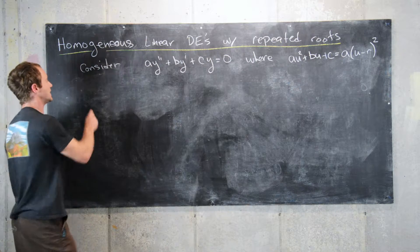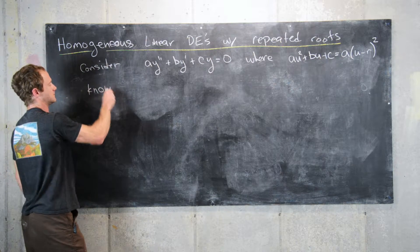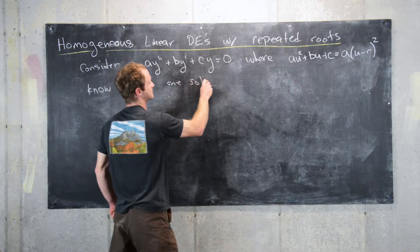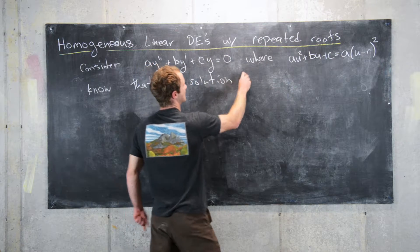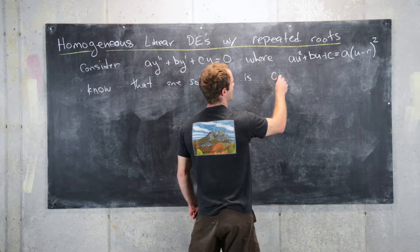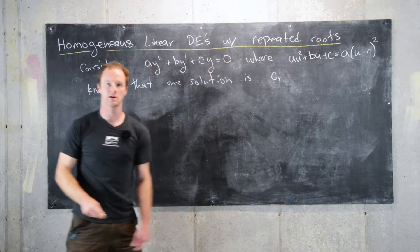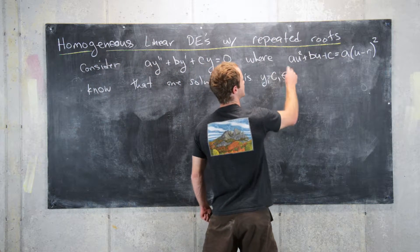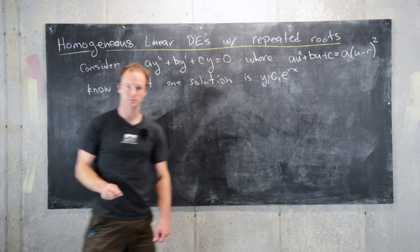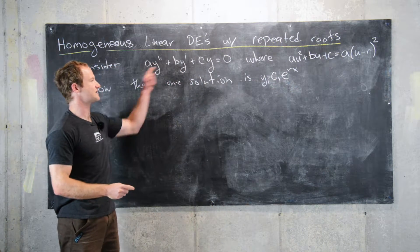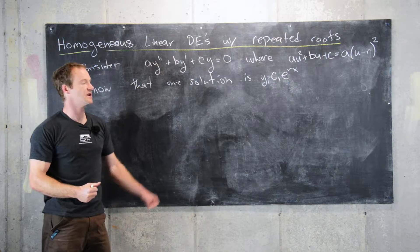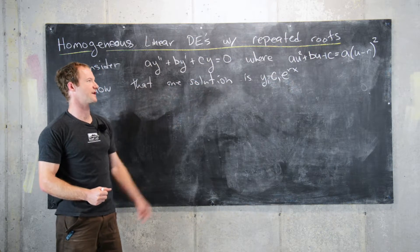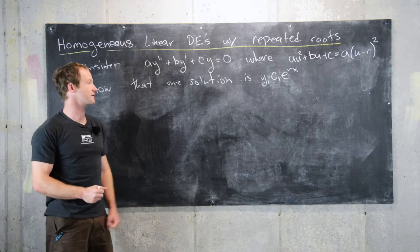So, we know from previous work that one solution is some constant c₁ times e to the rx. Generally, you get solutions to these types of differential equations by looking at the roots of this polynomial. But there's only one root to this polynomial, so we only get one solution by looking at the roots.